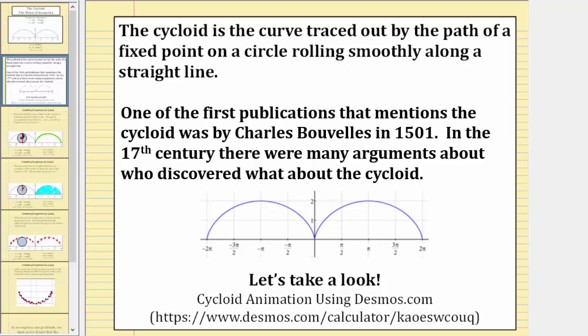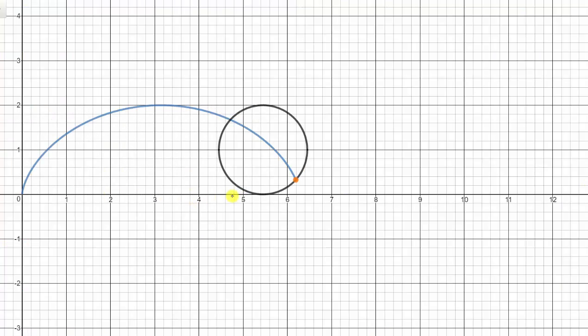And now let's use a desmos animation to view the trace of a cycloid curve. Here we see a circle rolling smoothly along the horizontal axis. The orange point is the fixed point on the circle that traces out the cycloid curve. So the blue curve is the cycloid curve.